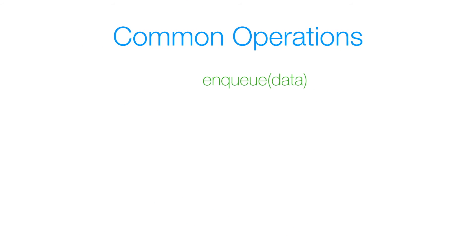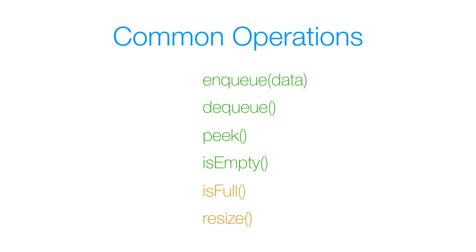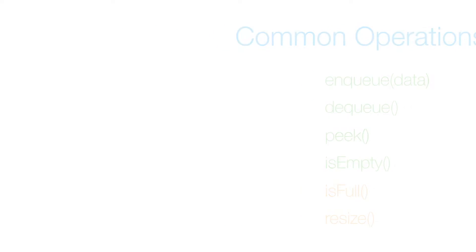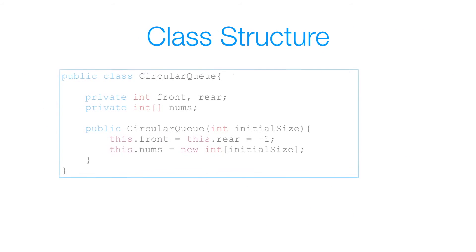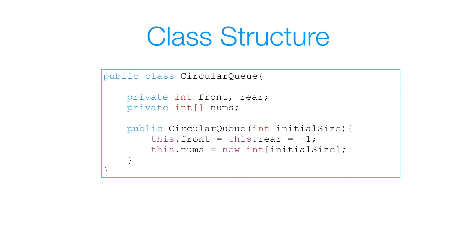Now let's look at the common operations associated with a queue. I'm going to cover 6 common operations: enqueue, dequeue, peek, isEmpty, isFull, and resize. Now isFull and resize methods are going to be helper methods. If you've seen my video on how to implement a linear queue using an array, you may notice that this is the exact same class structure as my linear queue — and that's because it is! The only things that change are going to be the way that we enqueue and dequeue.